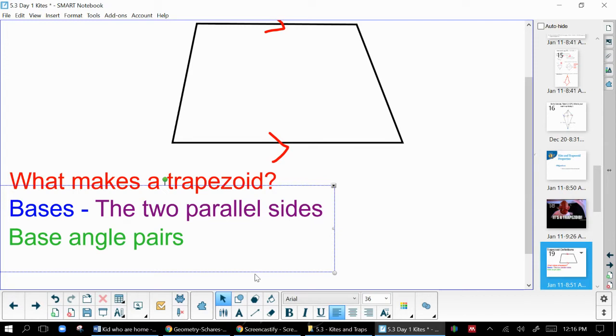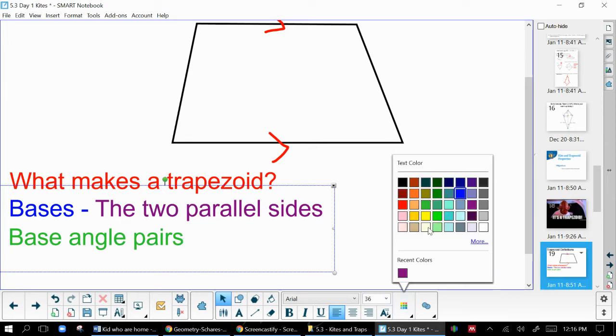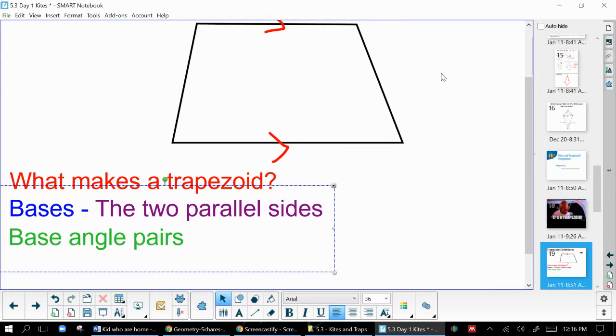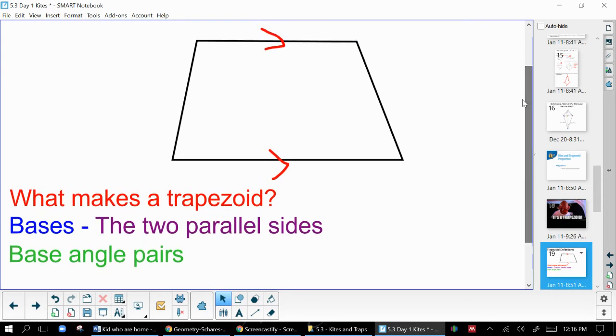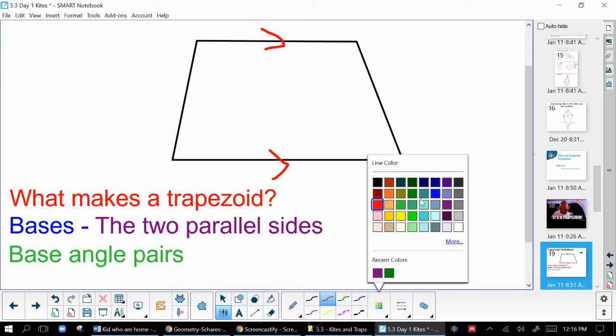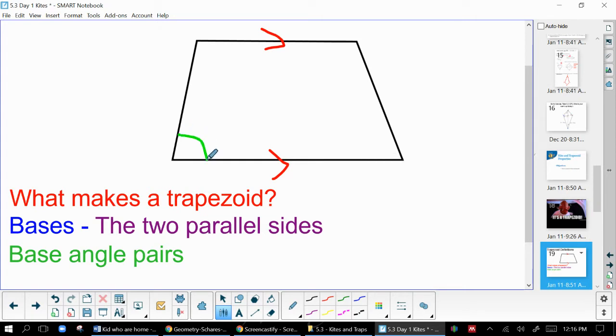And then the base angle pairs in a trapezoid are going to be the pair of angles at each base. So you're going to be looking at that one there as one pair of base angles, and then these two at the top as another pair of base angles.